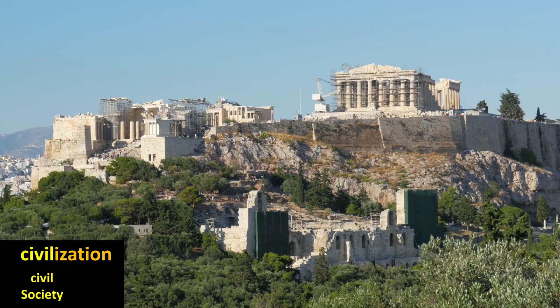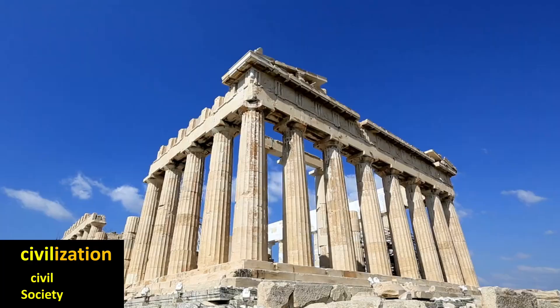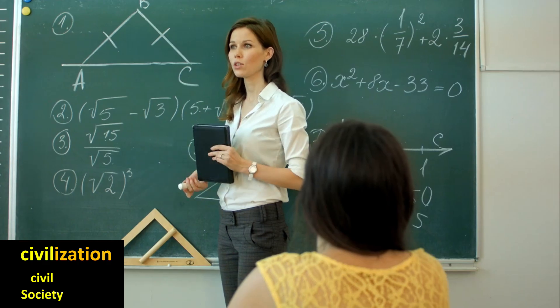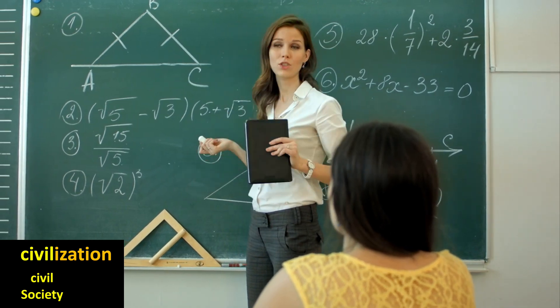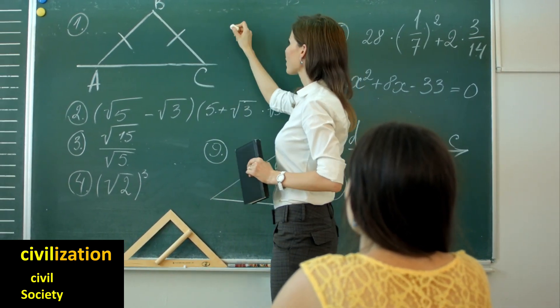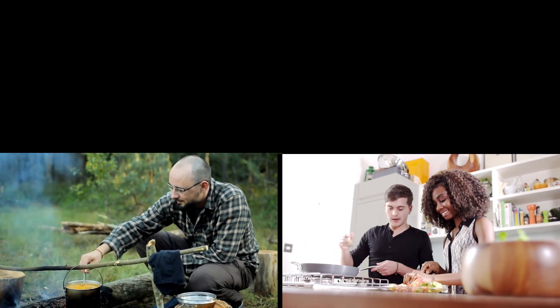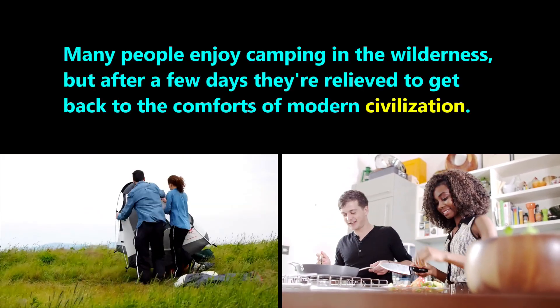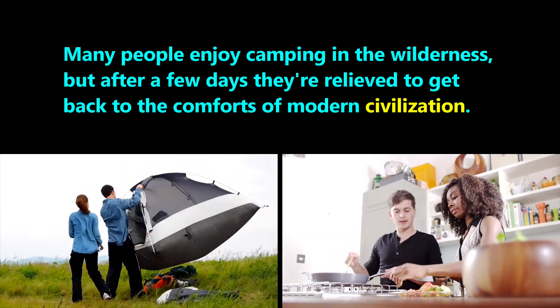The word civilization refers to the language, laws, and social structure that a group of people have who live together. For example, the ancient Greek civilization from 2,000 years ago is famous for being the first democratic government and for their math discoveries. Many of their ideas about government, philosophy, science, and math are still being taught in schools today. In everyday use, we often include technology as part of what we mean by civilization. For example: many people enjoyed camping in the wilderness, but after a few days they're relieved to get back to the comforts of modern civilization.